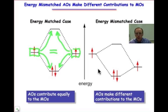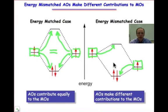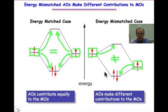In the case of the energy mismatched example, the atomic orbital that's lower in energy contributes predominantly to the bonding molecular orbital, and the atomic orbital that's higher in energy contributes predominantly to the antibonding molecular orbital. There are disproportionate contributions of those atomic orbitals to the resulting molecular orbitals, and that's where the polar covalent nature of the bond results.